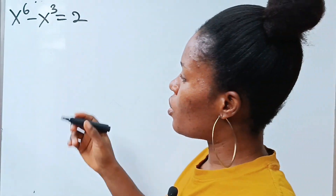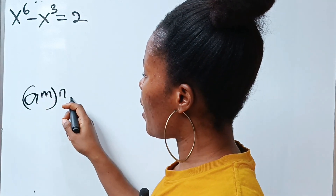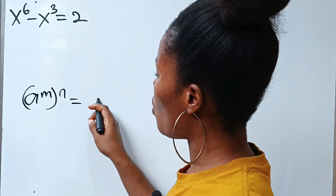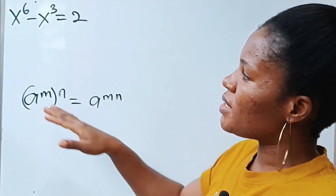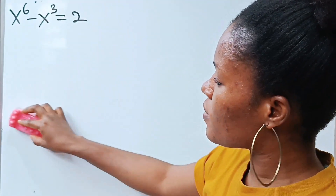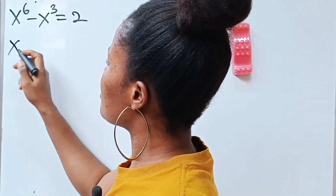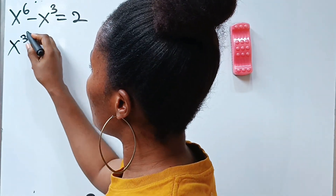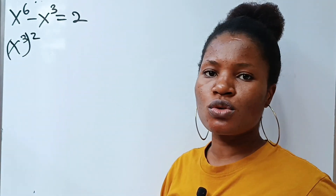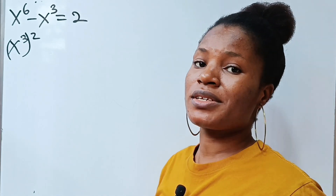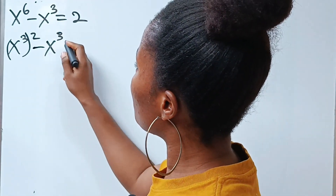Let's go straight to the point. Recall that a to the power of m raised to the power of n is equal to a to the power of m times n. So that means you can factorize x to the power of 6 as x to the power of 3, raised to the power of 2, since 3 times 2 still gives us 6 — minus x to the power of 3 is equal to 2.